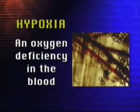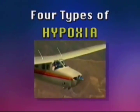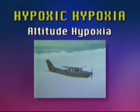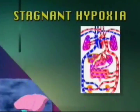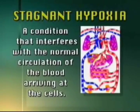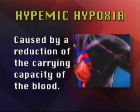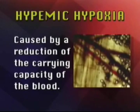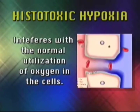In review: Hypoxia is an oxygen deficiency in the blood and affects every cell, especially the brain and nervous system. There are four types of hypoxia. Hypoxic hypoxia, also known as altitude hypoxia, is the most common form and occurs at the lung level. Stagnant hypoxia occurs at the circulatory level and interferes with the normal circulation of blood arriving at the cells. Hypemic hypoxia is caused by a reduction in the oxygen-carrying capacity of the blood and occurs at the blood level. Histotoxic hypoxia occurs at the cell level and interferes with the normal utilization of oxygen in the cells.